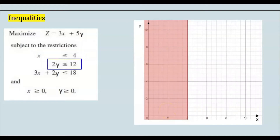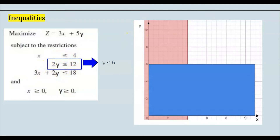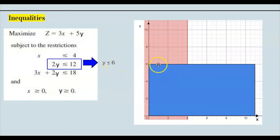Now the second equation: 2y ≤ 12. Before graphing on the y-axis, we convert by dividing both sides by 2, since the coefficient of y is 2. That gives us y ≤ 6, which produces a horizontal line at 6. Since it's 'y less than 6,' everything on the bottom portion is shaded.